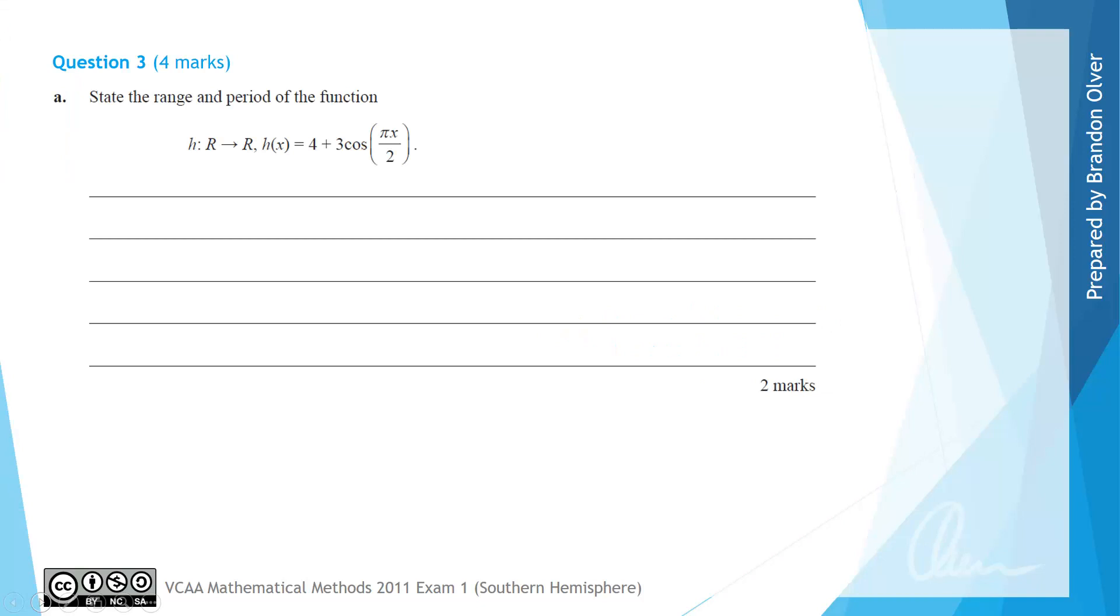For part A we are asked to state the range and period of the function h which has a domain of all real numbers and a rule 4 plus 3 cos of pi x over 2. First, we need to remember that the period of a sine or cosine graph is equal to 2 pi divided by n where n is the number multiplying x, and in this case it's pi over 2 multiplying x.